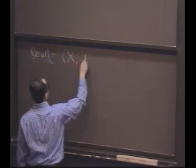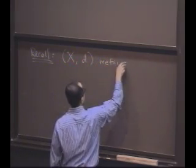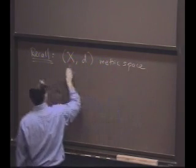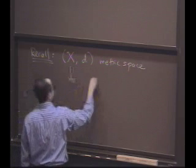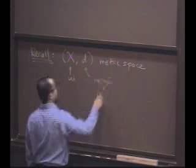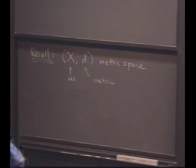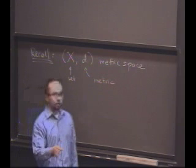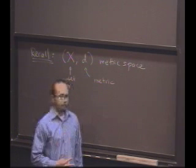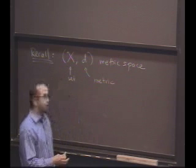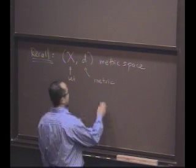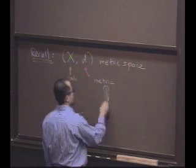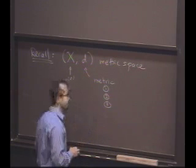So we have the idea of a metric space. A metric space is really just a set together with a metric, which is a notion of distance. And the metric satisfies three properties. Who remembers what those three properties are? Non-negativity, and it's going to be zero if and only if the two points are the same. The distance between two points will only be zero if the two points are the same. What were the other two properties?